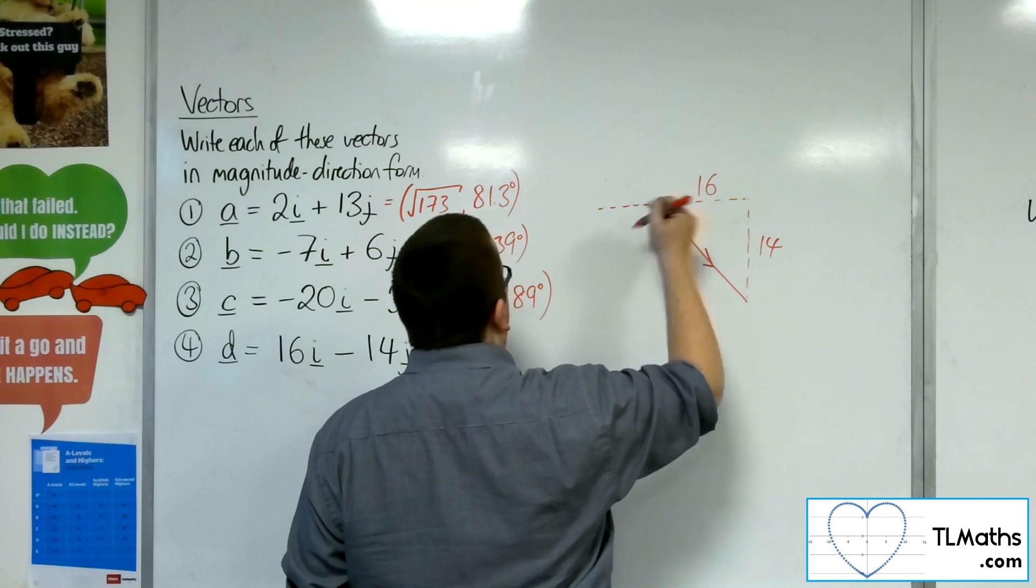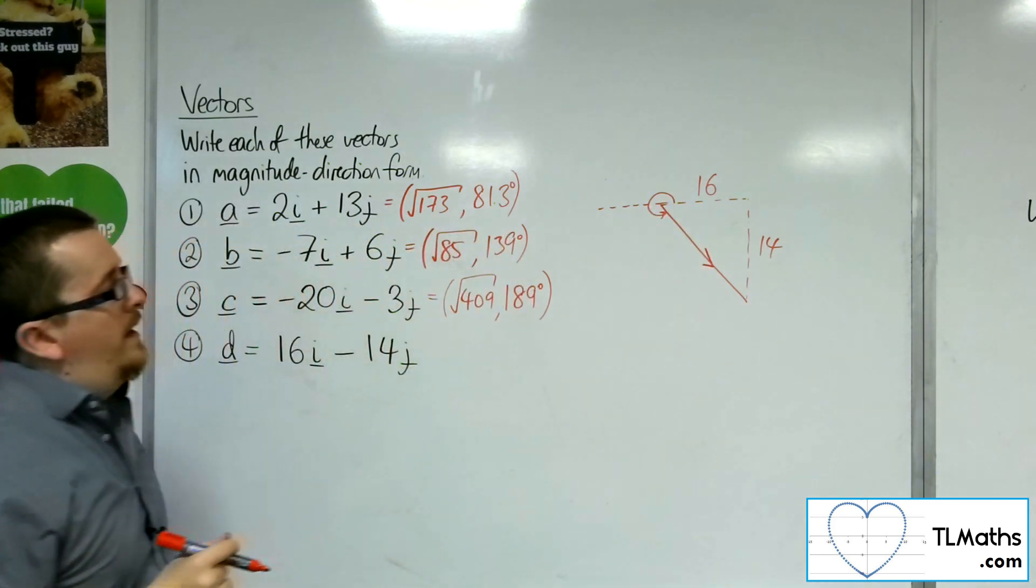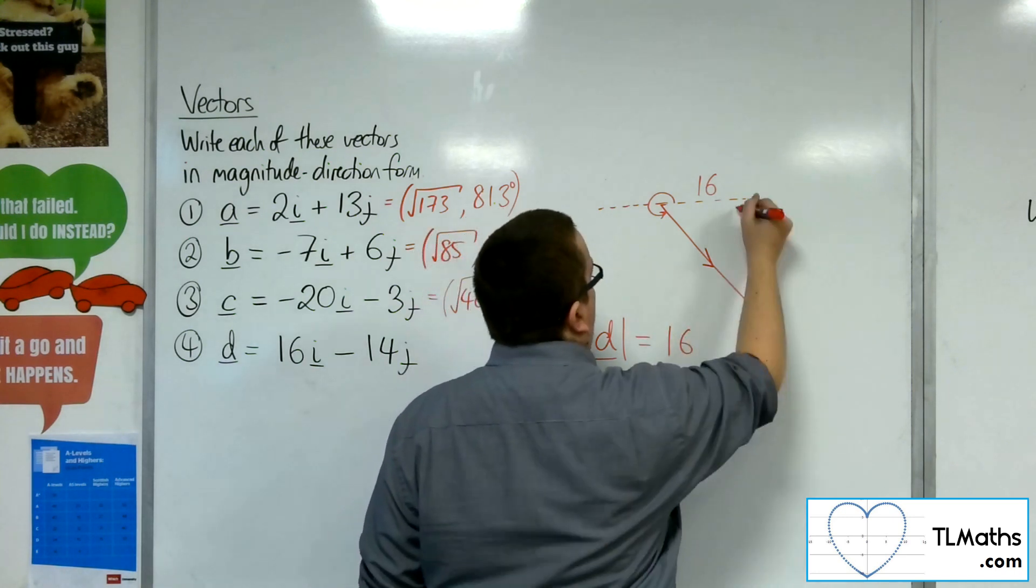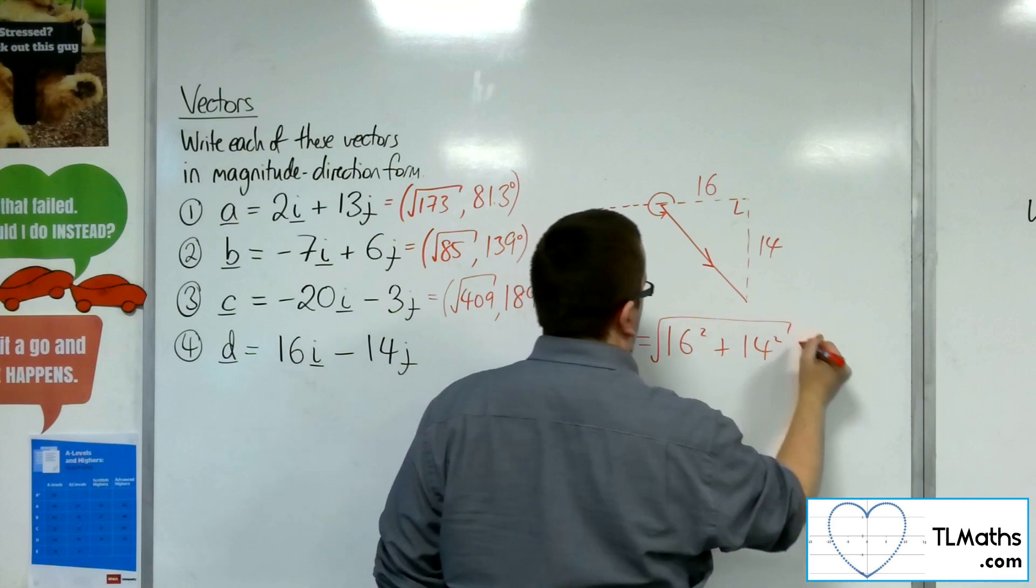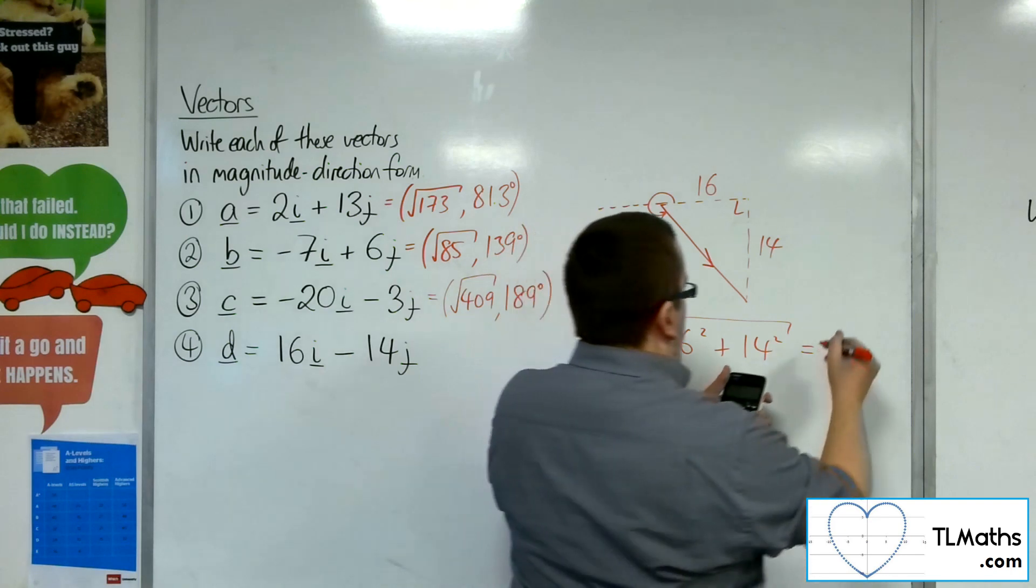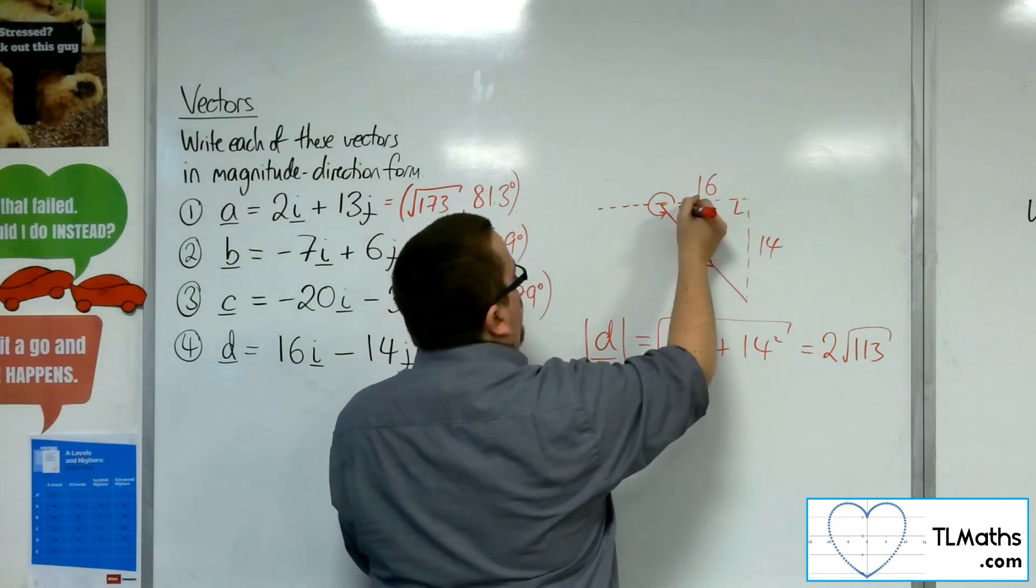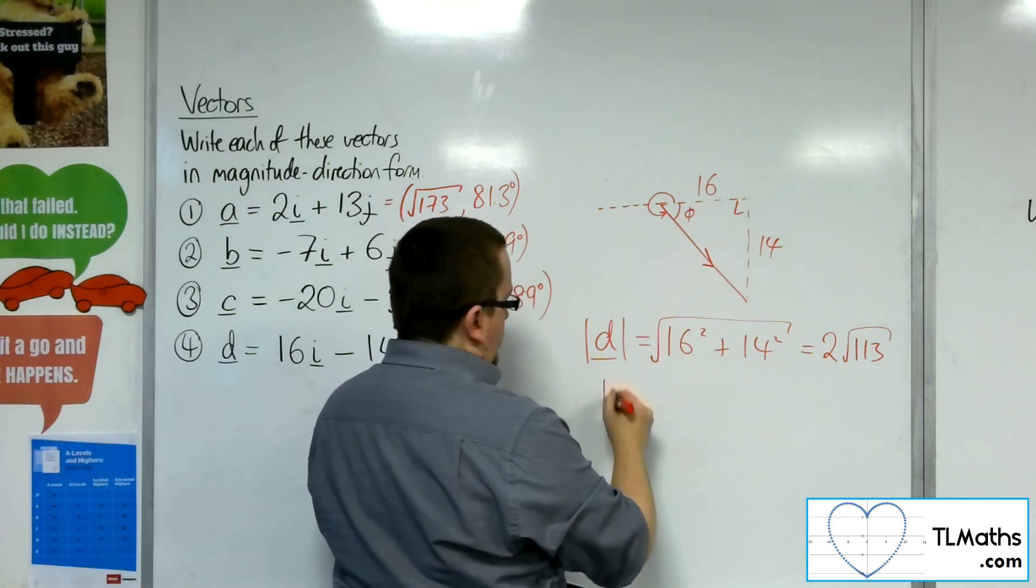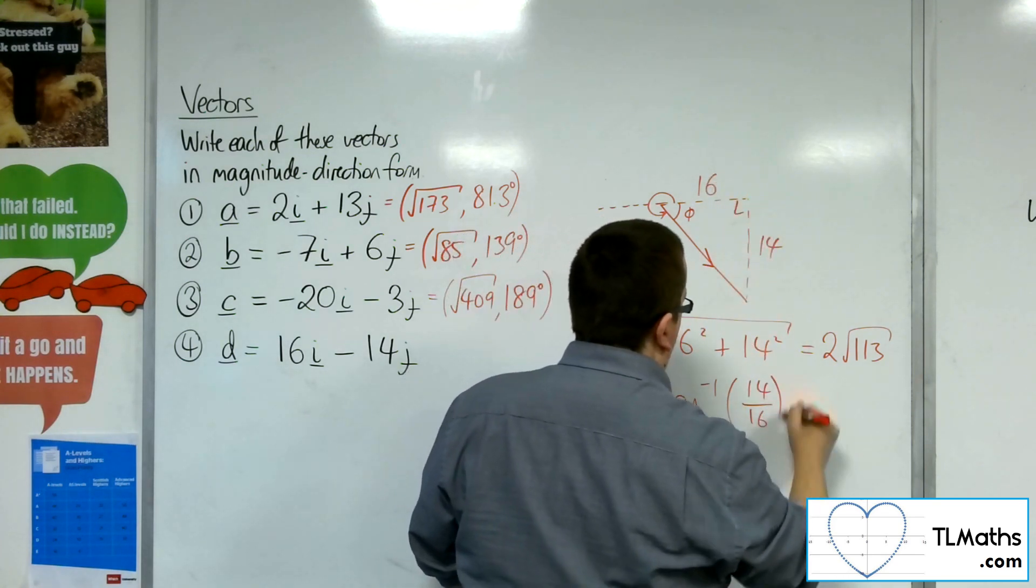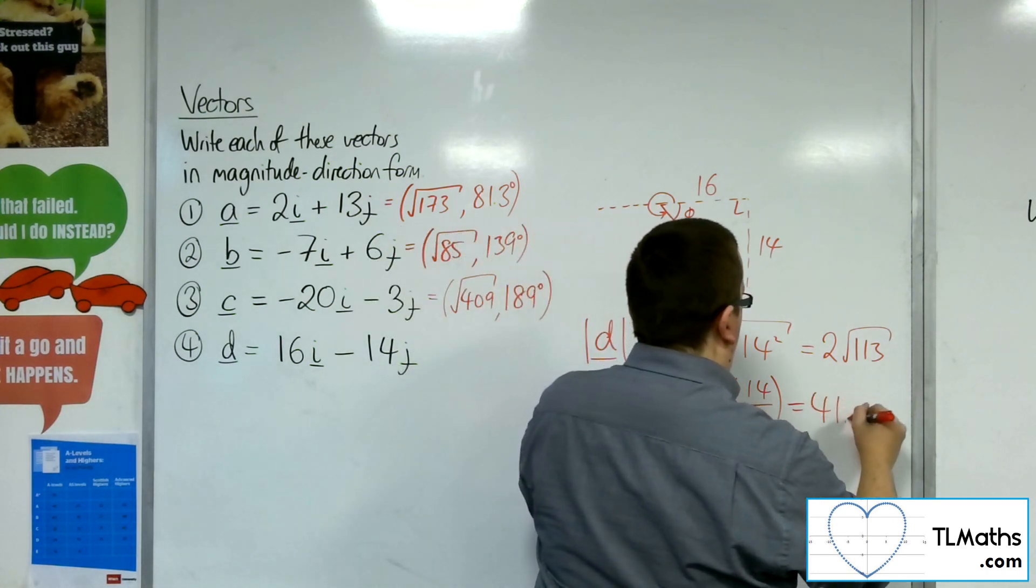And if I wanted to work out the direction, if we're going to be going the same way as those three, I would need to find that angle there. So, I can work out the length of the vector using Pythagoras. So, that's a right angle. 16 squared plus 14 squared, square rooted, which is 2 root 113. Now, as for the angle, if we work out that angle there, that phi. Phi is the inverse tan of the opposite over the adjacent. So, 14 over 16, which is 41.2 degrees to 3 sig fig.